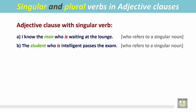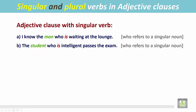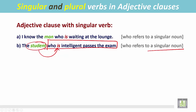Another example: 'The student who is intelligent passes the exam.' In this sentence, the adjective clause begins with 'who' and usually follows the noun immediately. The noun it follows is 'student,' which is a singular noun. Since the adjective clause follows this singular noun, the verb inside the adjective clause is also singular.